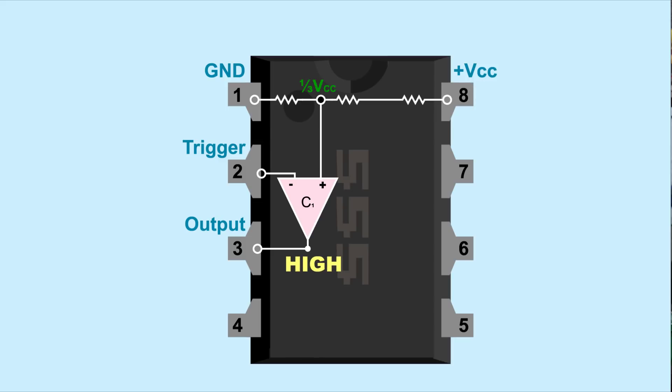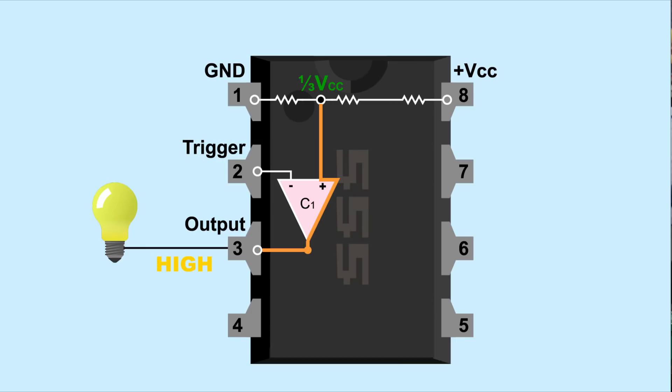When comparator 1 outputs high, the 555 also outputs high. To make comparator 1 output high, the voltage at pin 2 needs to be lower than one-third Vcc. The easy way to do this is to connect the trigger pin to ground. This connects pin 2 to zero volts, which is lower than the one-third Vcc voltage of the positive input, so comparator 1 outputs high.